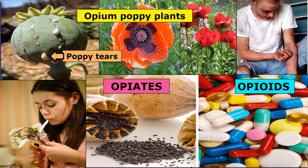Opiates are drugs that come from nature — from the opium poppy plants. The poppy plants secrete a liquid sometimes called poppy tears, which contains chemicals that affect the brain. They're very powerful painkillers and very addictive. We have morphine, codeine, and thebaine that can be derived from poppy tears. Opioids — where the suffix '-oid' means 'similar to' — are often synthetic, meaning made in a laboratory, quite often using thebaine or other natural opiates to create drugs used for pain relief.